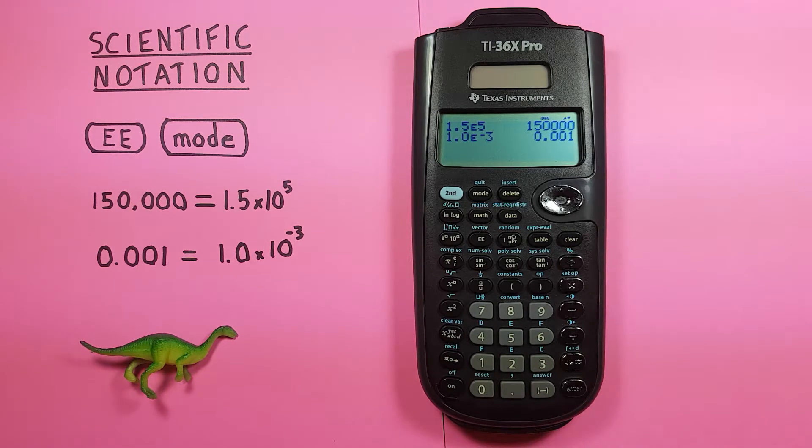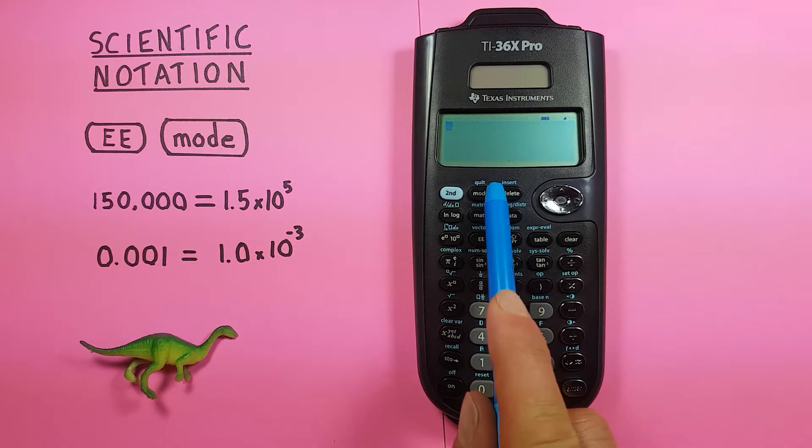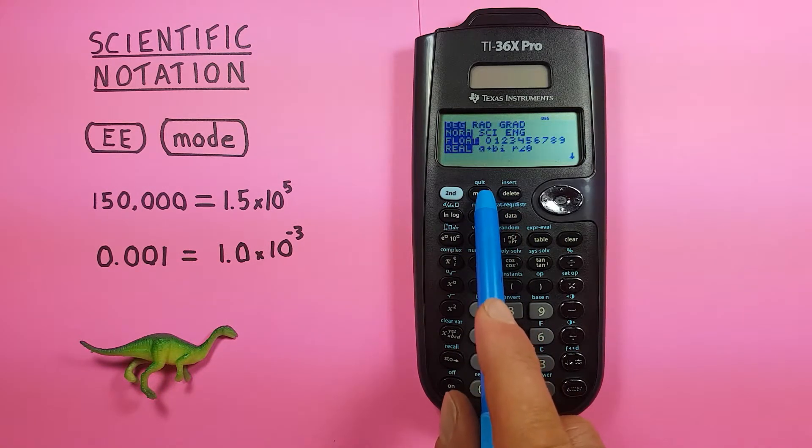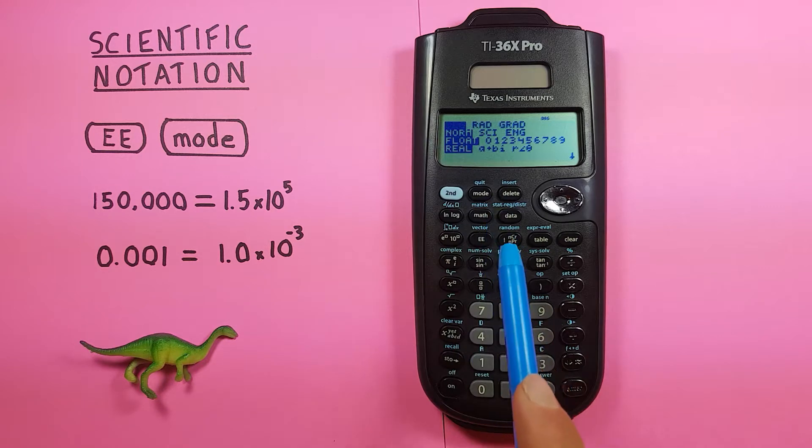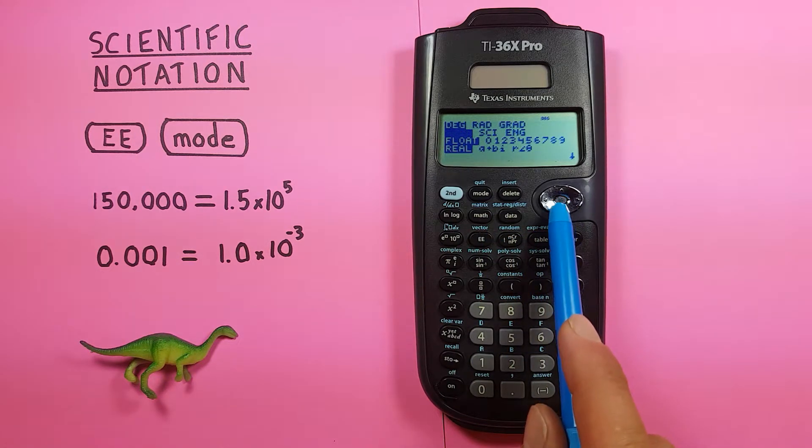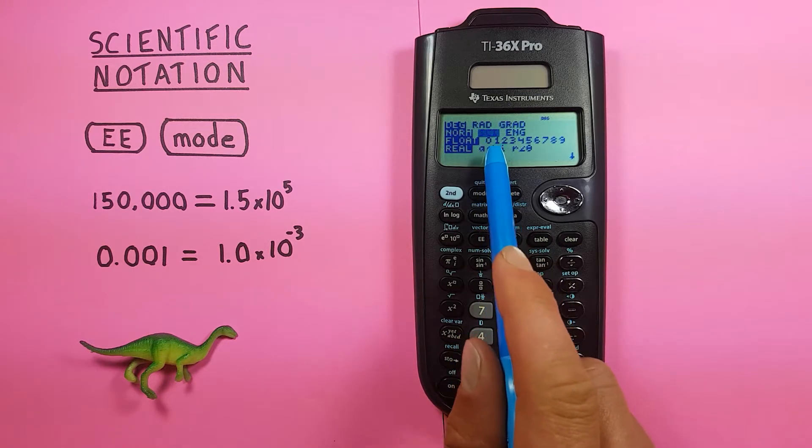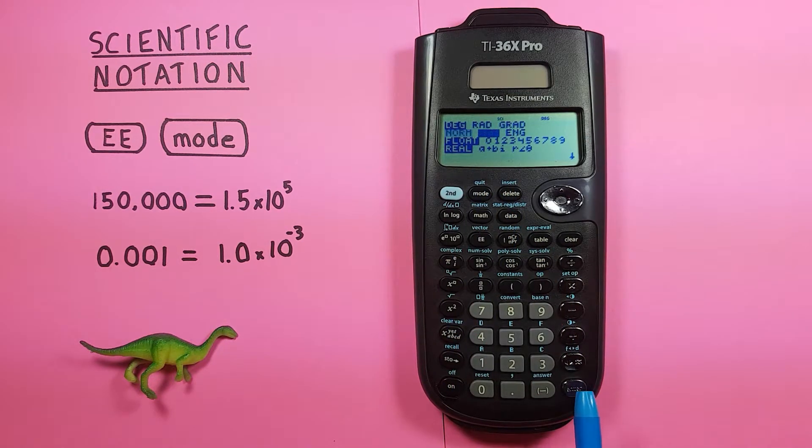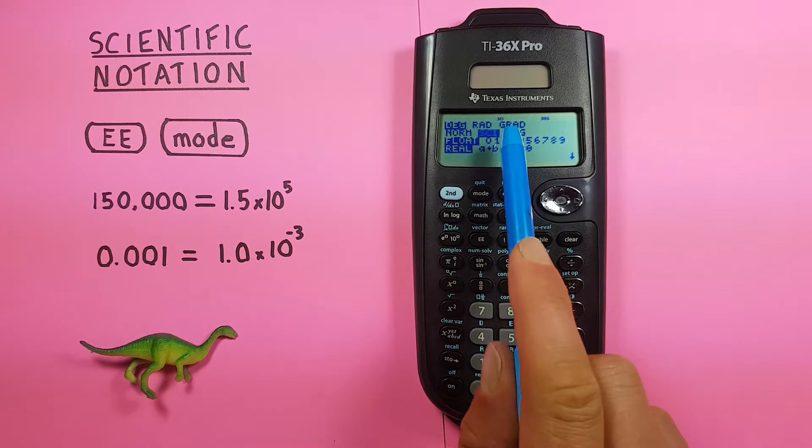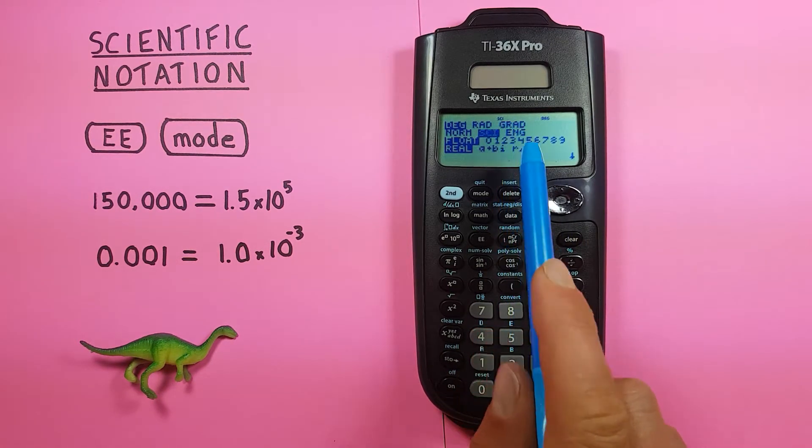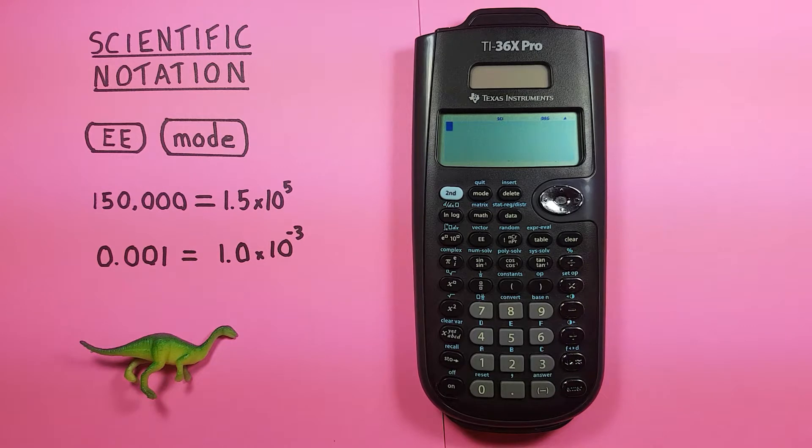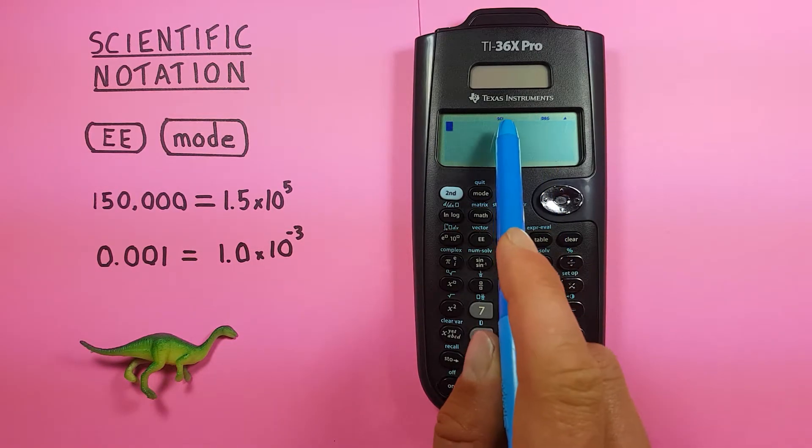But what if we want to convert numbers into scientific notation rather than having them already? Well, then we can first turn our calculator into scientific notation mode by pressing the mode key. You see it's flashing on the DEG there, so we want to go down one and to the right one to that SCI. Press enter to select it, and you should see a small SCI on the top of your screen appear there. Press clear to get out of that menu, the SCI remains there.